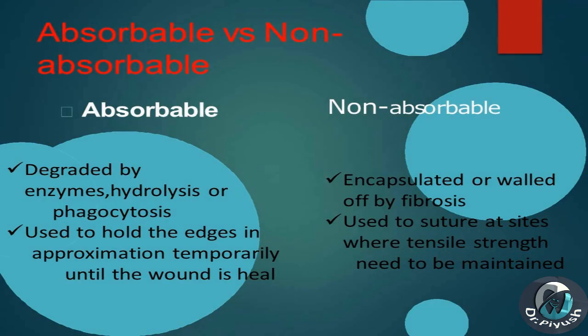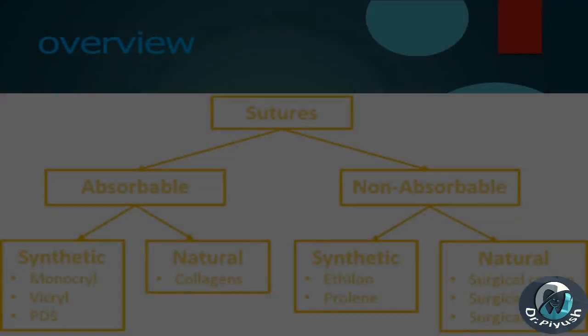Absorbable vs. Non-absorbable. Absorbable: degraded by enzymes, hydrolysis, or phagocytosis; used to hold wound edges in approximation temporarily until the wound is healed. Non-absorbable: encapsulated or walled off by fibrosis; used to suture at sites where tensile strength needs to be maintained.